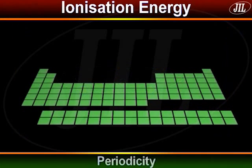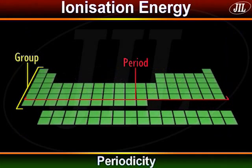Ionization energy generally decreases from top to bottom in a group and increases from left to right in a period.